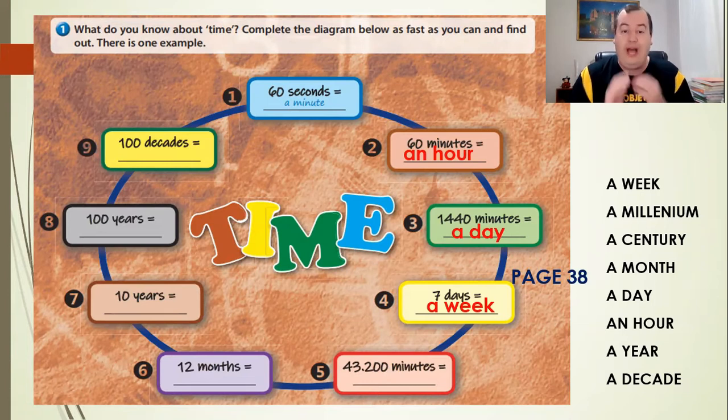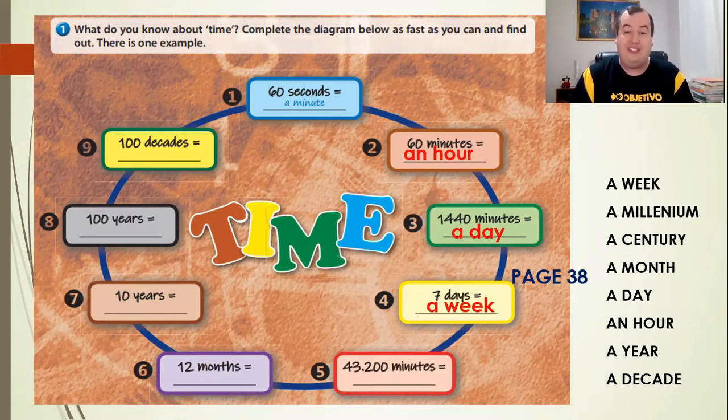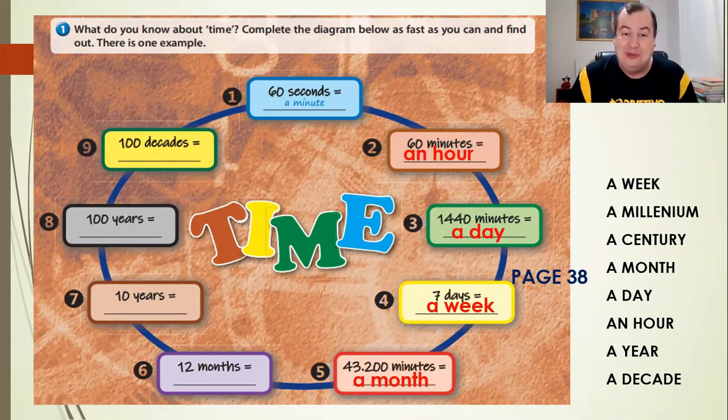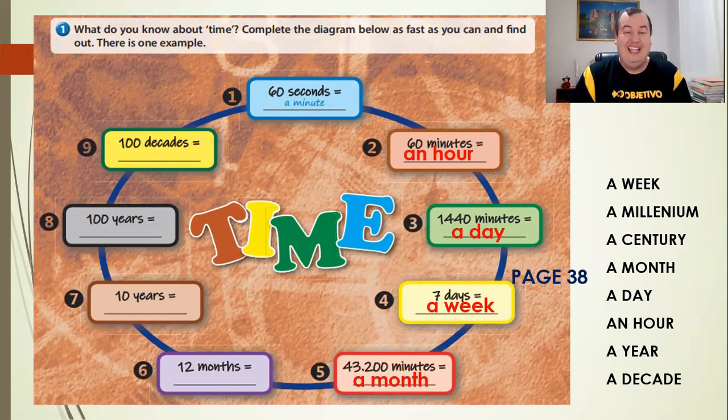Good. Wow, we have a big number here. We have 43,200 minutes. Wow. 43,200 minutes equals what? Aha, it's equals a month. So, one month has 43,200 minutes. Wow. É muito minuto num mês, hein, gente bonita?